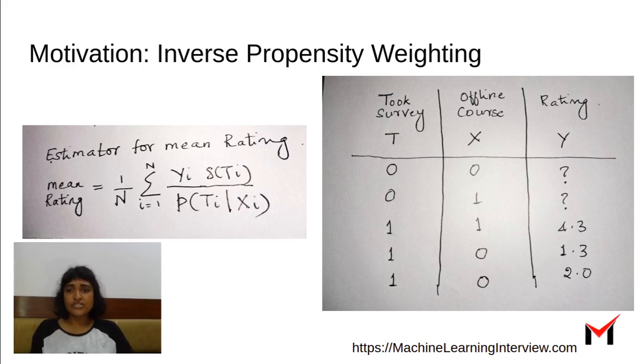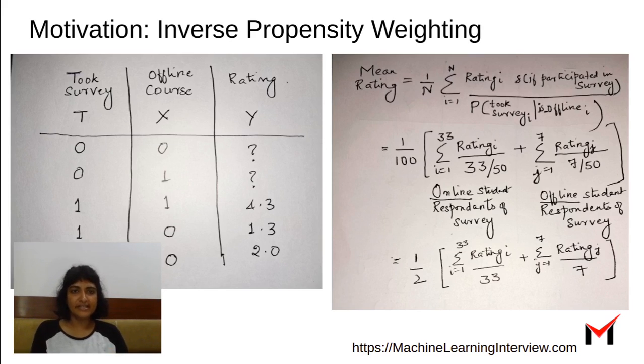So the solution is instead of doing a simple mean, we actually add a denominator, which includes the probability or propensity that the person took the survey given whether they took the course online or offline. So let me put it in more words to make it clearer to you.